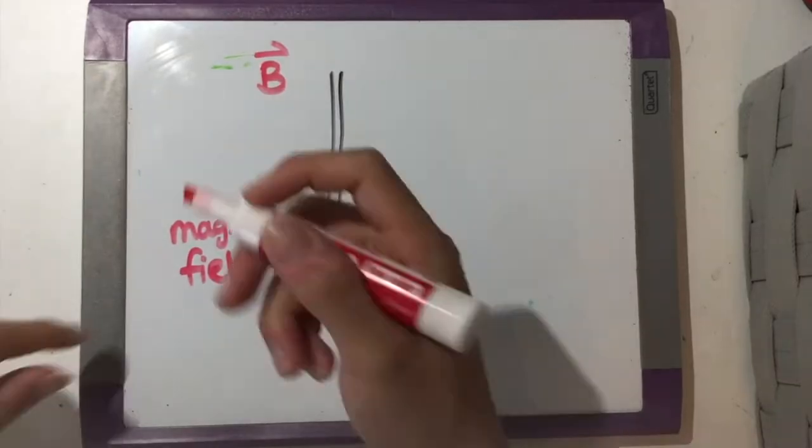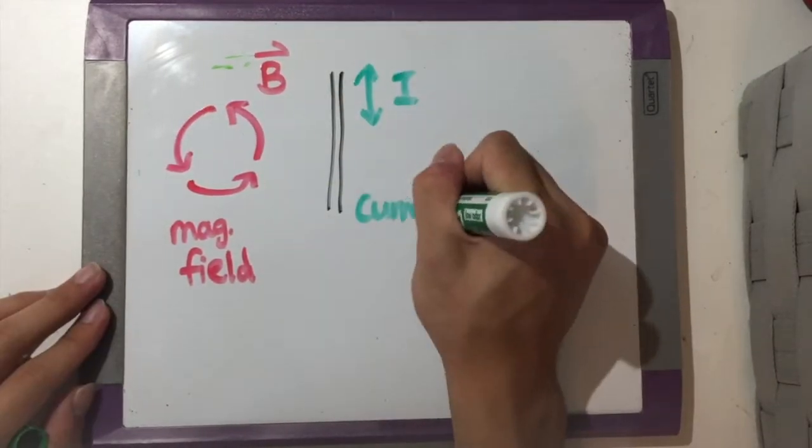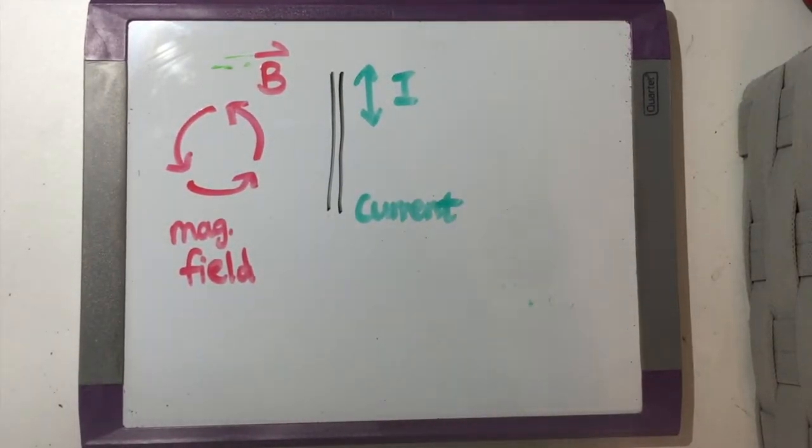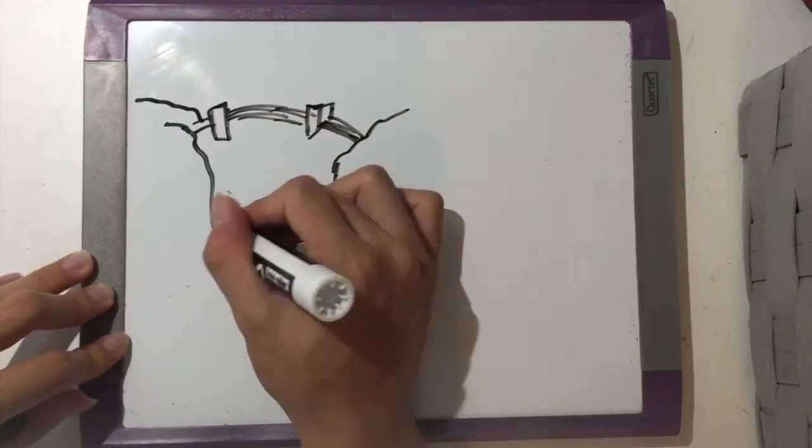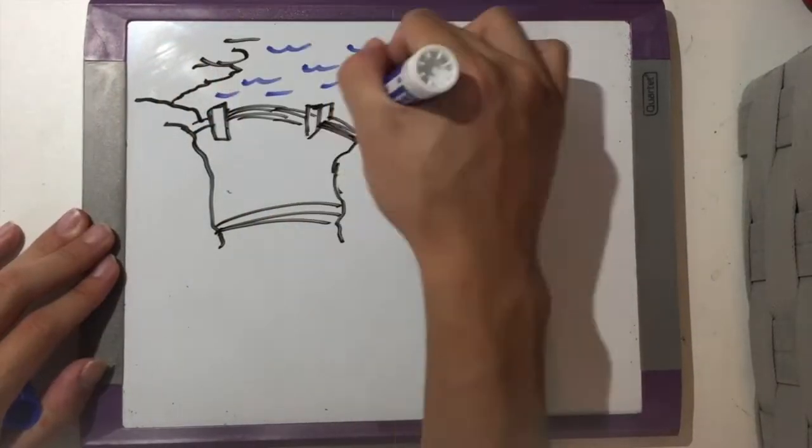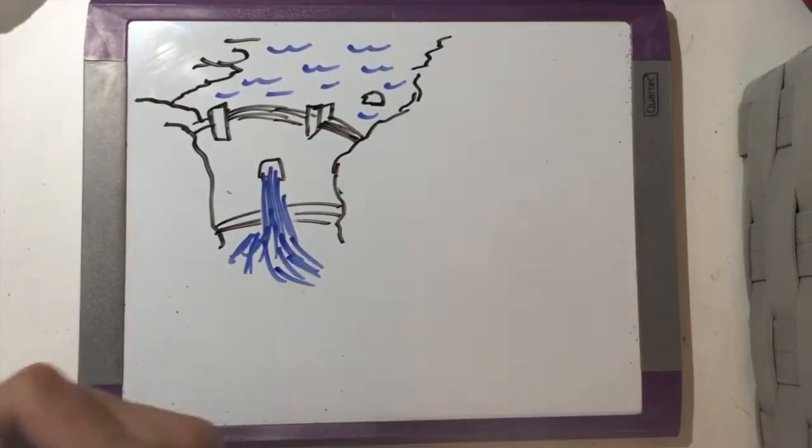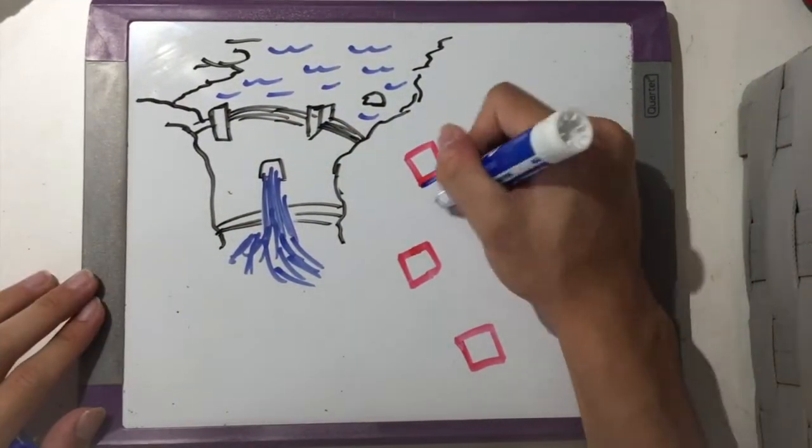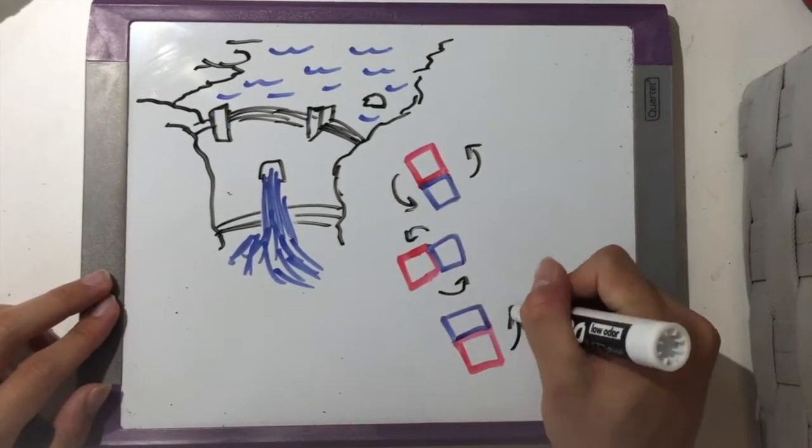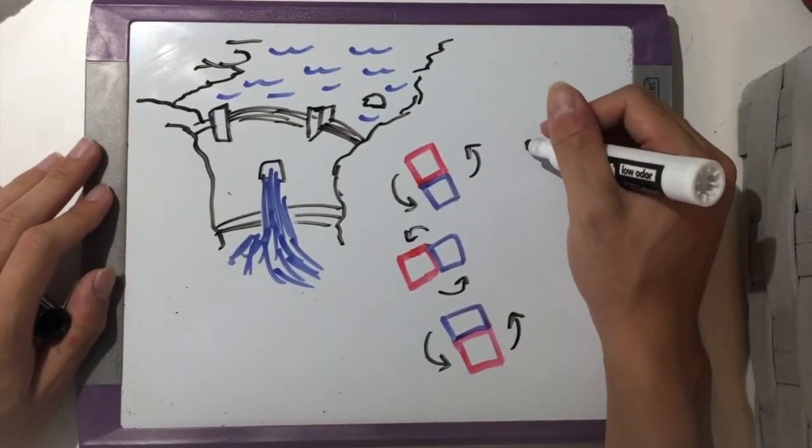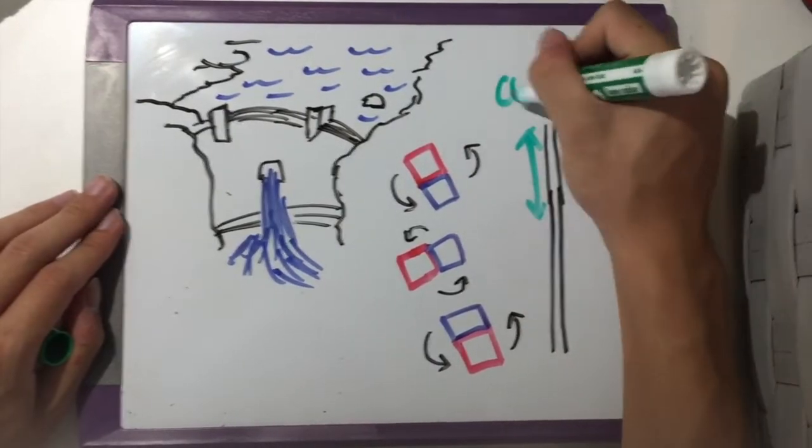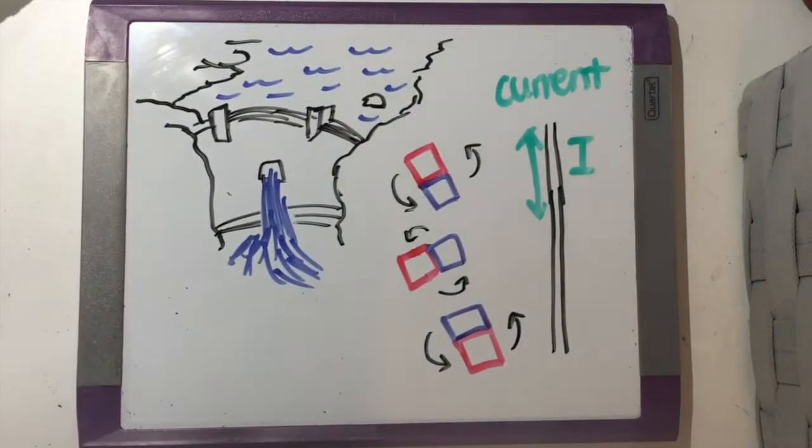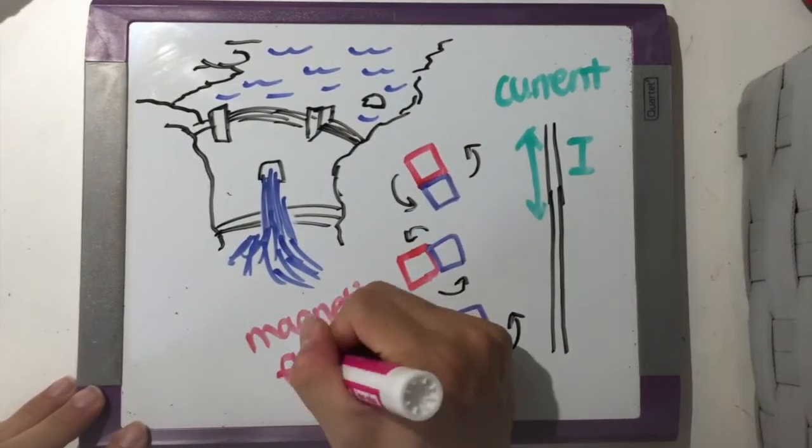This concept revolutionized modern technology as we learn how to create electric generators based on this principle. Let's take river dams for example, which is just a very big generator. In simplest terms, river dams create electricity by spinning magnets using the power of water. When the water pushes the magnet to rotate, it will create different magnetic fields. By creating a magnetic flux, the spinning magnet will create current in a coiled wire using its changing magnetic field.